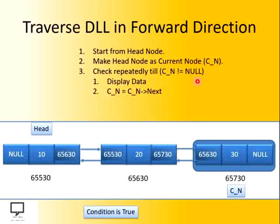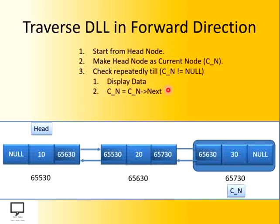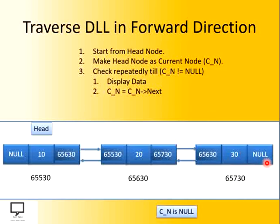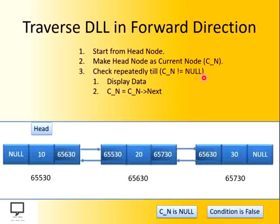Let's move to the next node. We are now at the position of that node. Again, we check the condition whether current node is not equal to null. Condition is true. Display the data and move to the next. Now, what is the next holding? The current node's next is null. So your current node is null now. We check this condition — and this condition is false. If this condition is false, we will not enter into the loop, and we will stop at this position.